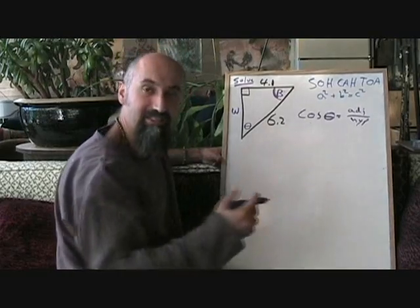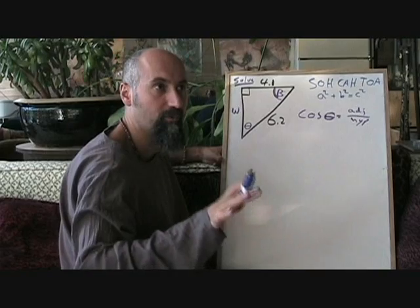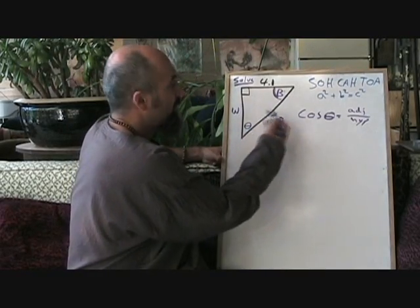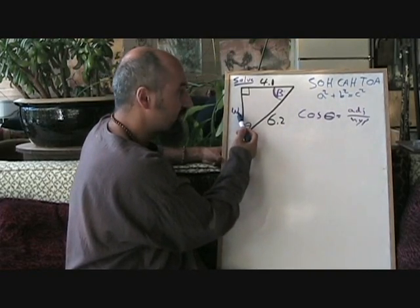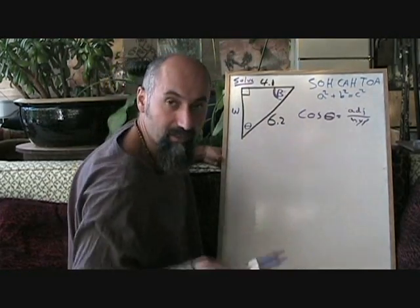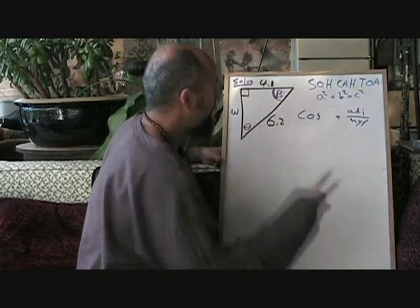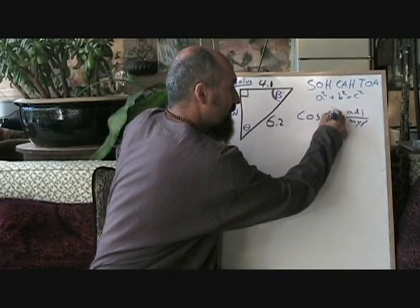Theta is a general term. I'm not talking about this theta. I'm just saying theta, which is a general term for an angle. If you're actually solving for theta, you couldn't use cosine, because you don't have the adjacent here. So just so you don't get thrown off here, I'm going to change this theta to the angle that we're actually solving, which is beta.